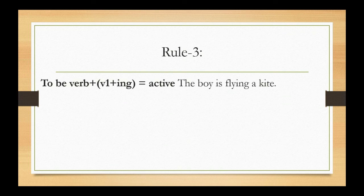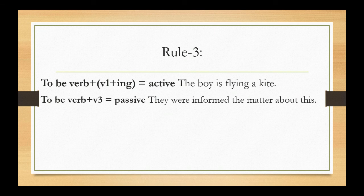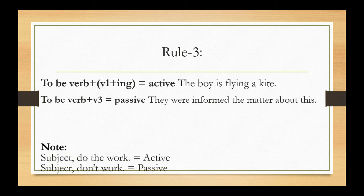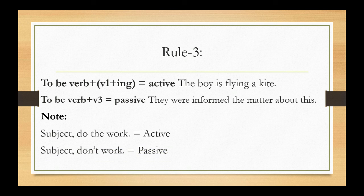Verb 3. To be plus verb plus ing - active voice: The boy is flying a kite. To be verb plus verb 3 - passive voice: The boy is informed about the matter. Note: In active voice, subject does the work. In passive voice, subject doesn't do the work.